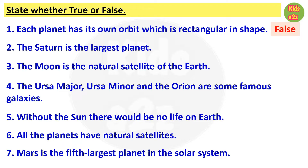That is false, because orbits are elliptical or oval in shape. Second one: Saturn is the largest planet. This one is also false, because the largest planet is Jupiter. Number three: the Moon is the natural satellite of the Earth. That is true.